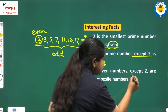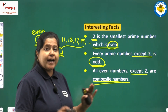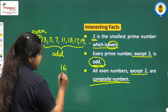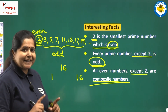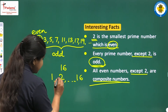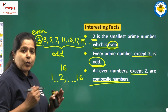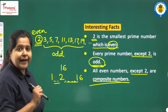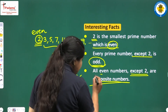Third fact: all even numbers except 2 are composite numbers. This means all even numbers other than 2 are composite — they have more than 2 factors. For example, if I take 16: it will have at least 2 factors — 1 and the number itself. Since it is an even number, it will be completely divided by 2. So it will have 2 also as one of its factors, meaning it will have more than 2 factors and is a composite number. So we say all even numbers except 2 are composite numbers.